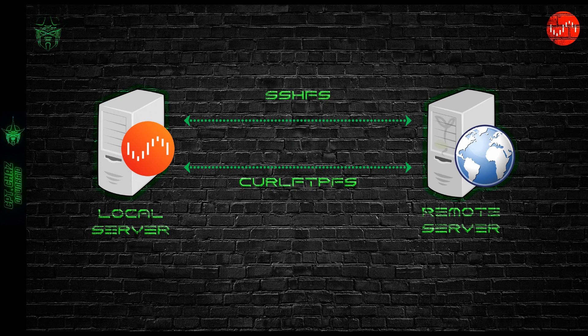As another quick example, let's say I have a seedbox that doesn't support SMB mounts. Even with a VPN connection it would still be nice to be able to save or move files around without having to use a tool like FileZilla for simple tasks. There are some nuances we'll get into later in the video between SSHFS and curlftpfs, but if it sounds like something you're interested in then stick around and let's get started.